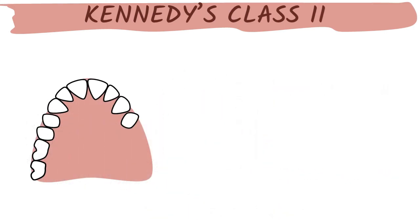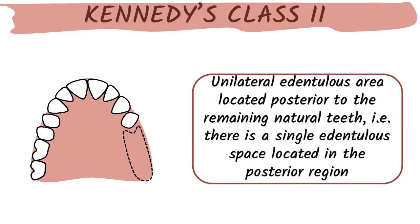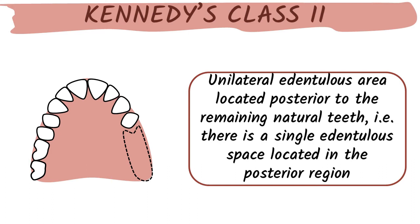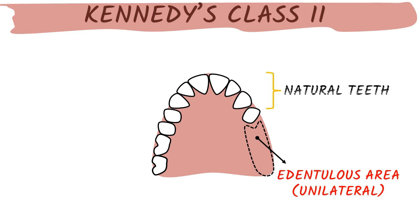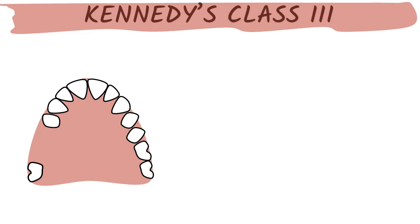Kennedy's Class 2 is a unilateral edentulous area located posterior to the remaining natural teeth — that is, a single edentulous space in the posterior region. As you can see in the figure, the edentulous area is unilateral. The only difference between Class 1 and Class 2 is that Class 1 has bilateral and Class 2 has unilateral edentulous area, both located posterior to the remaining natural dentition.